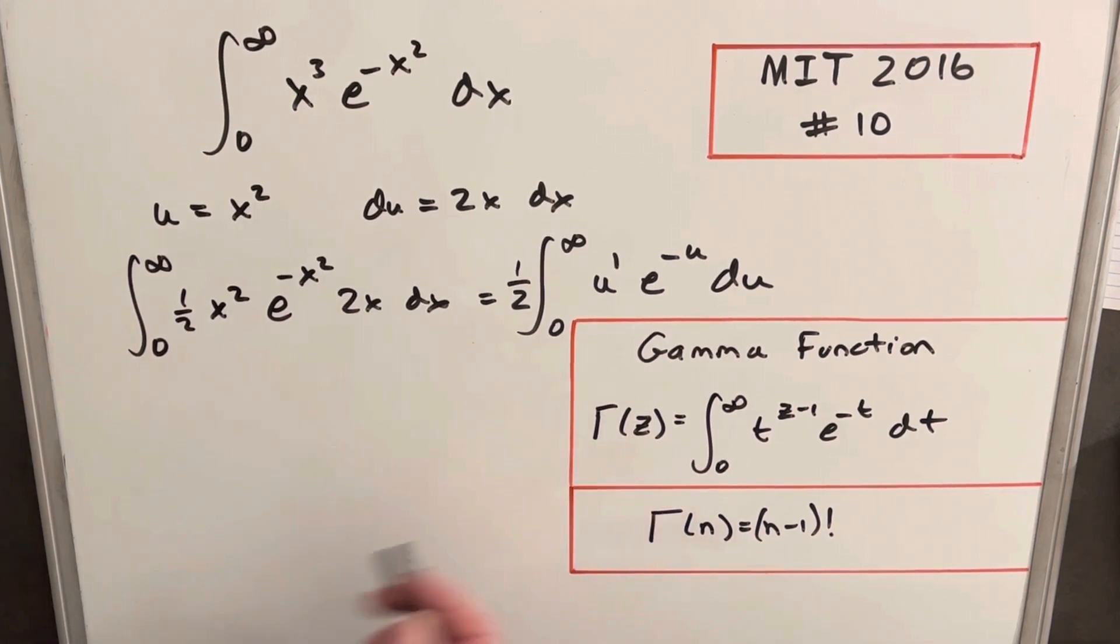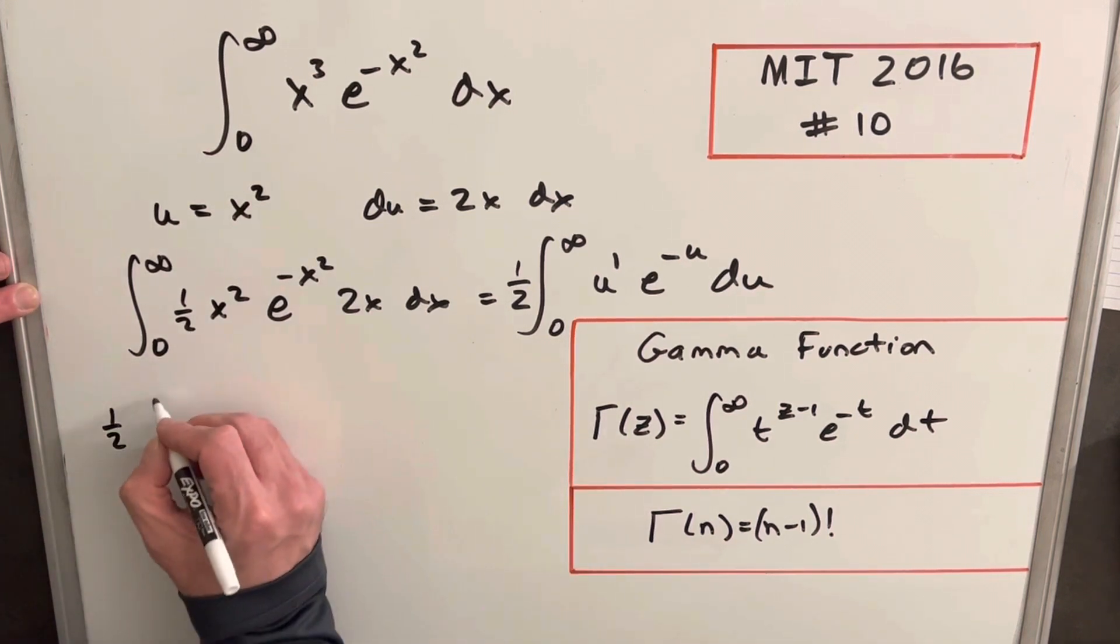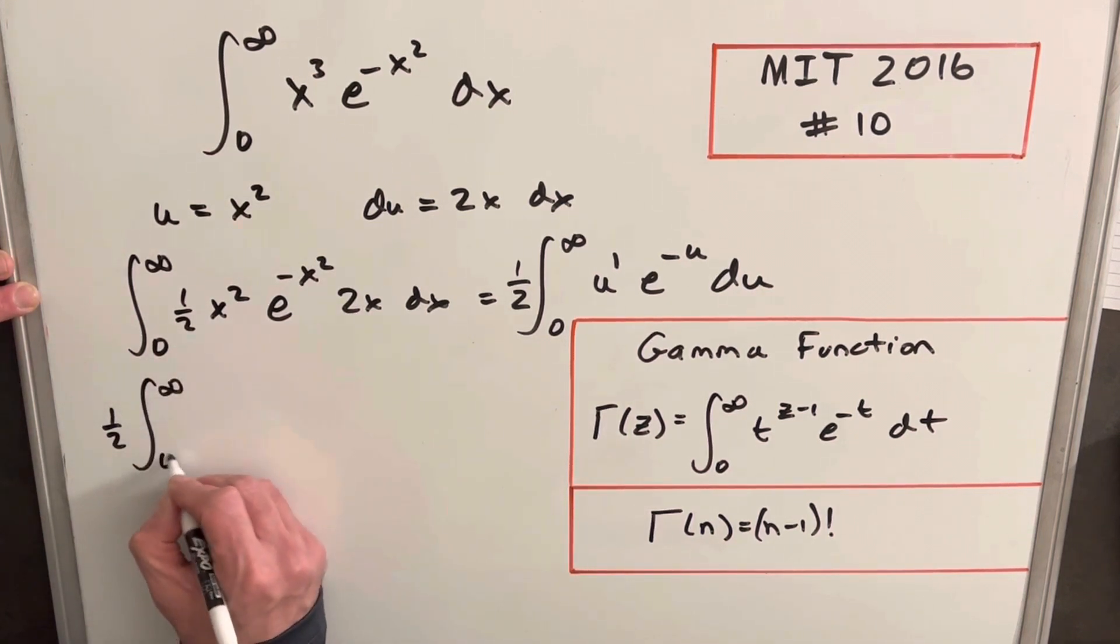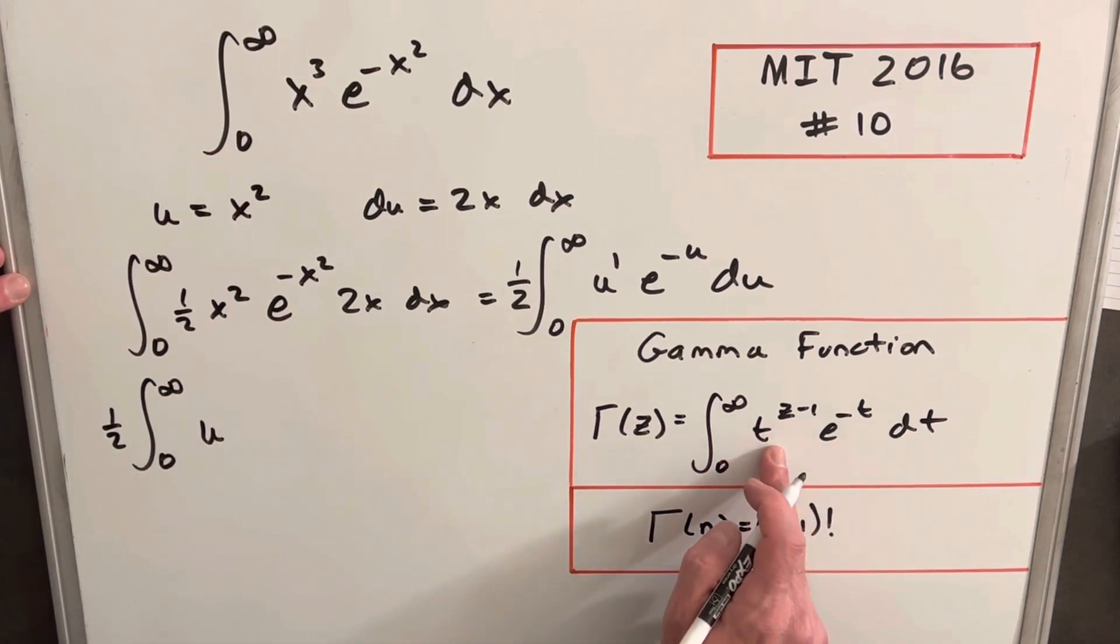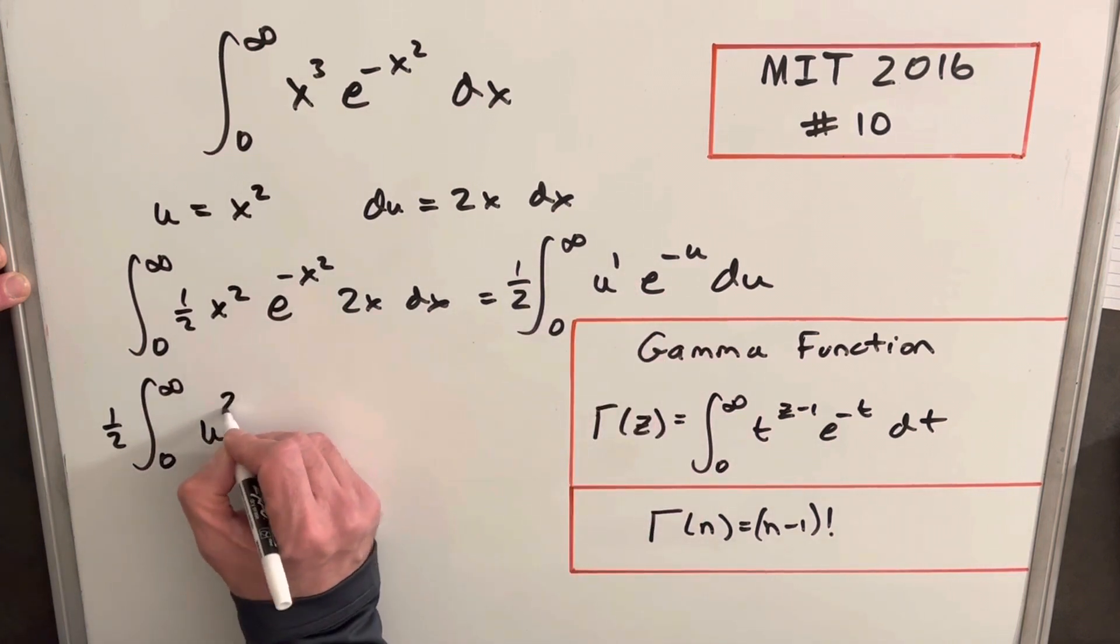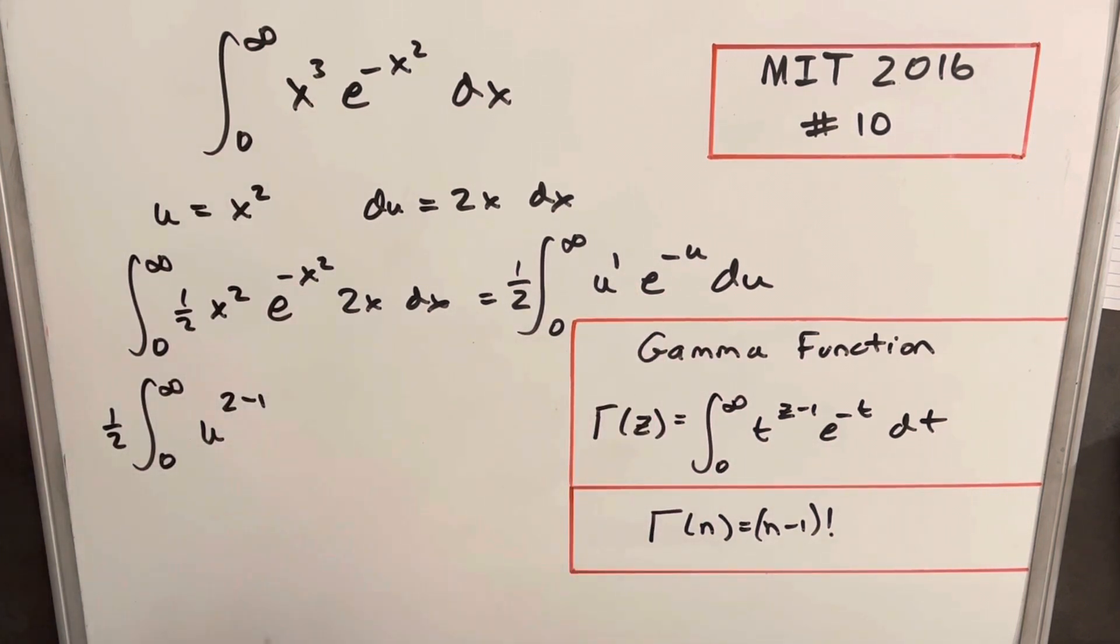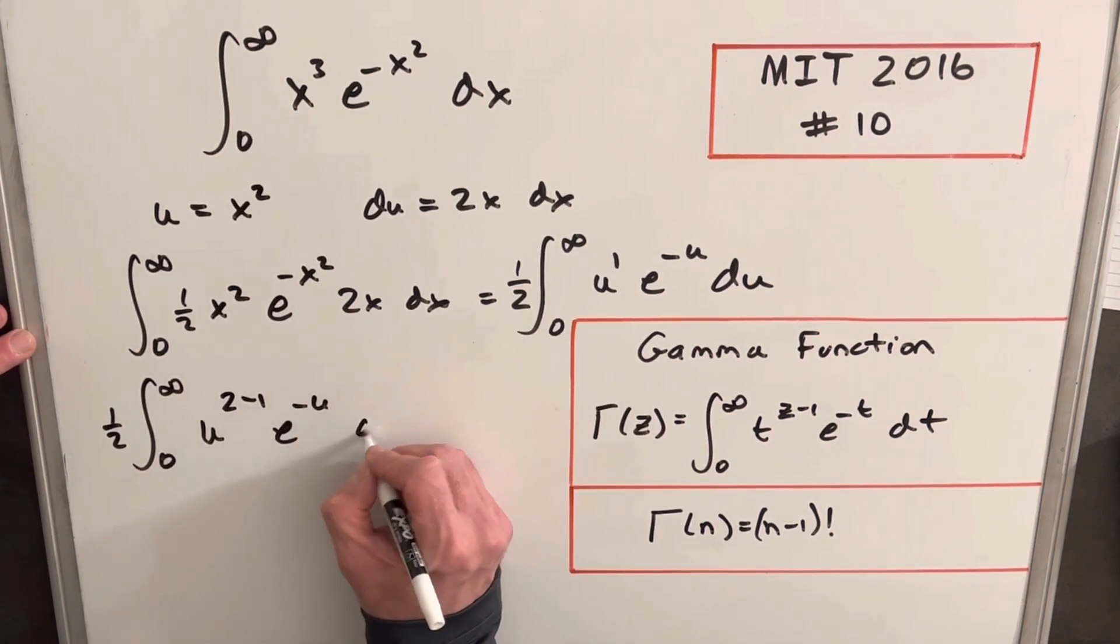So what I'm going to do to get this just to be explicit and use the gamma function, I'm going to rewrite this. So we're going to have half, infinity to 0, and then on our u, we want it in this z minus 1 form. So 1 can be written as 2 minus 1, e to the minus u, du.